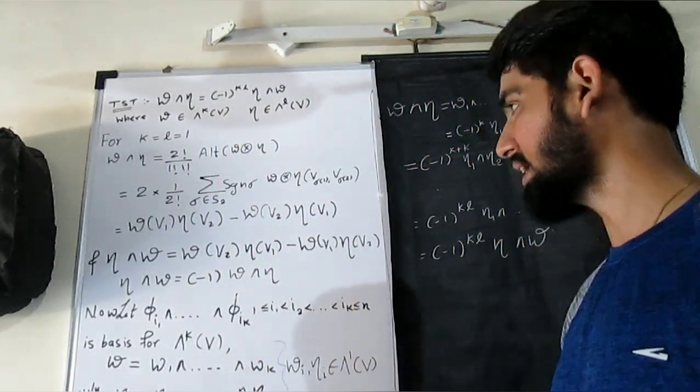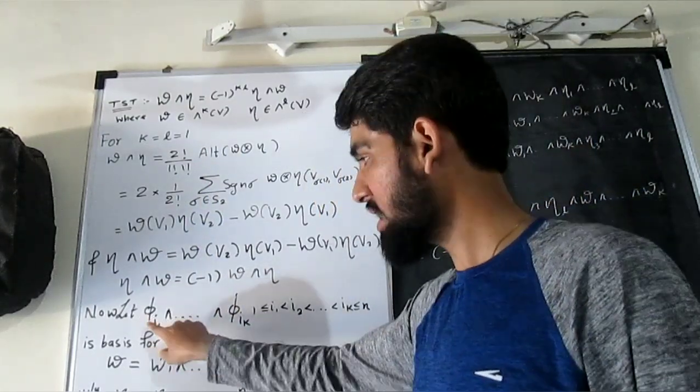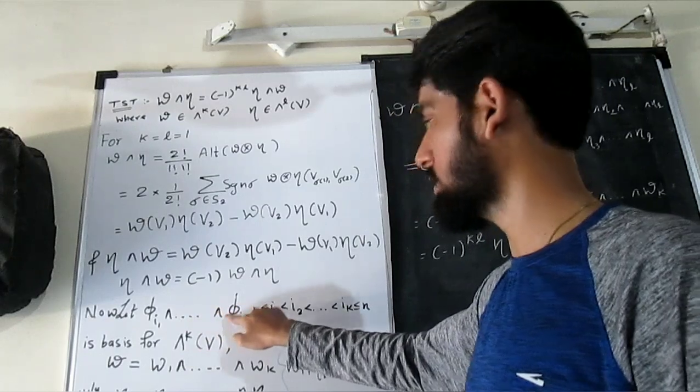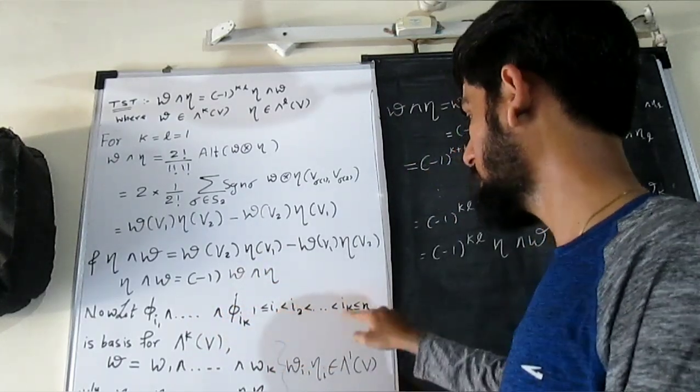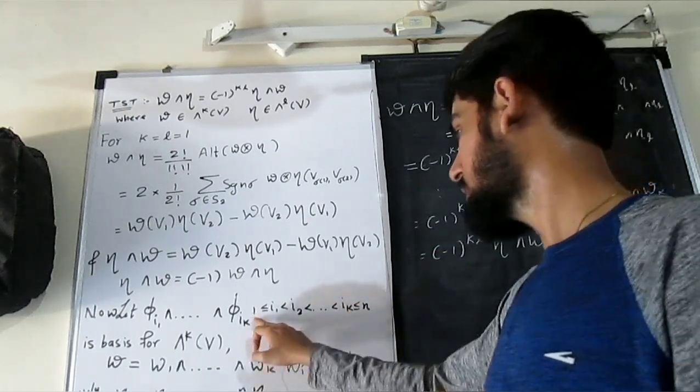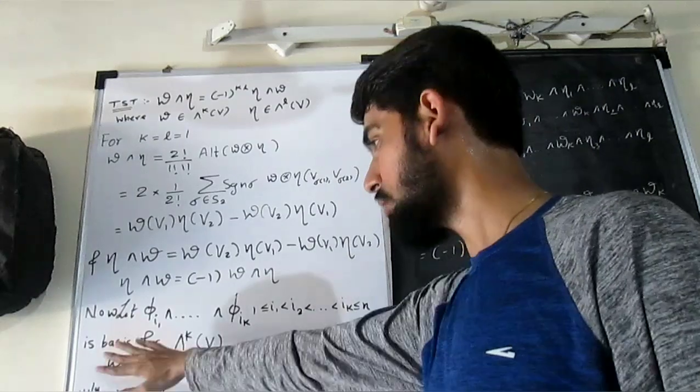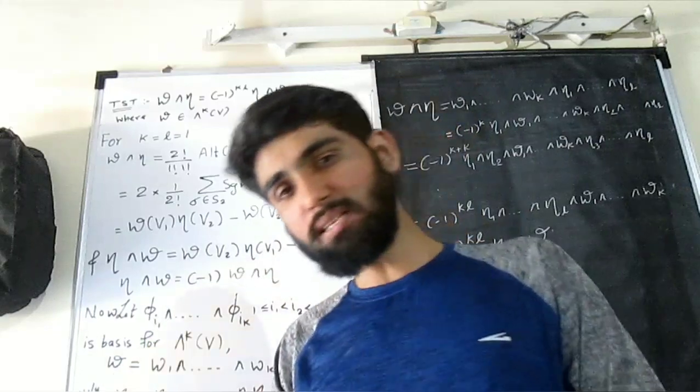Freely simply, and if we know this, the general proof becomes simple. As we know, phi i1 wedge product till wedge product with phi ik, where i1, i2, ik, if we go all are distinct and all running between one to n, forms the basis for k-form on V.